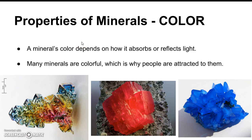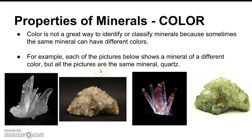The first property we'll talk about is color. A mineral's color depends on how it absorbs or reflects light. Many minerals are very colorful — this one is multicolored, this one is red, and this one is blue. There are as many different colors of minerals as you can think of in the rainbow. However, color is not a great way to identify or classify minerals because the same mineral can have different colors. For example, all of the pictures below show quartz, but each one is a different color.